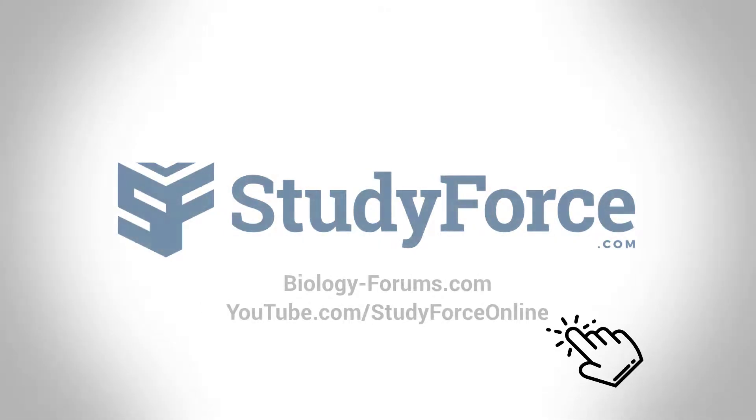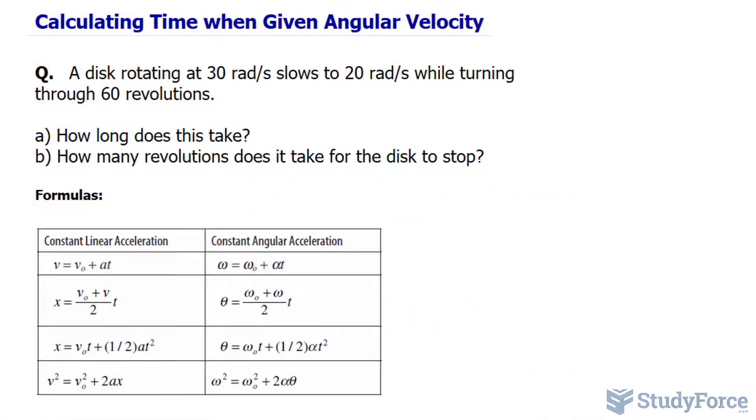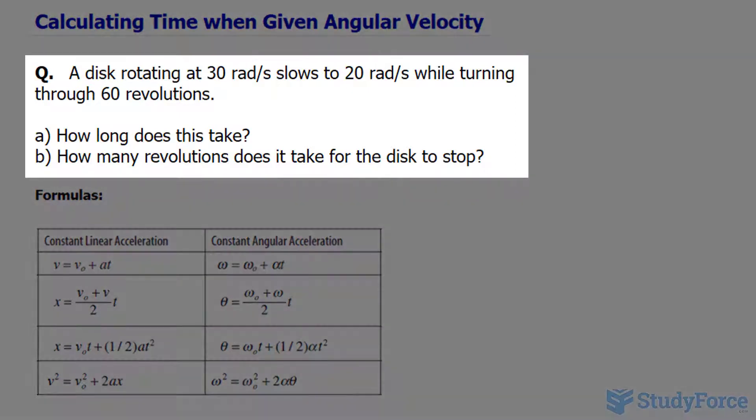In this lesson, I'll show you how to calculate the time when given angular velocity. The question reads, a disk rotating at 30 radians per second slows to 20 radians per second while turning through 60 revolutions.